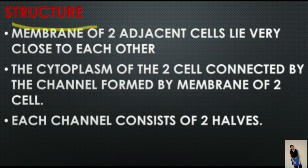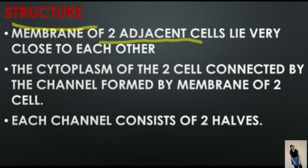In gap junction, the membranes of two adjacent cells lie close to each other. The cytoplasm of the two cells is connected by channels formed by the membranes of both cells, so molecules move from one cell to the other directly through these channels without having contact with the extracellular fluid.